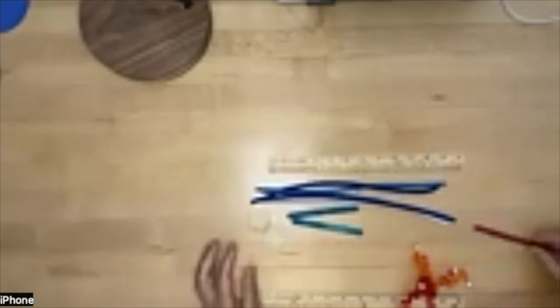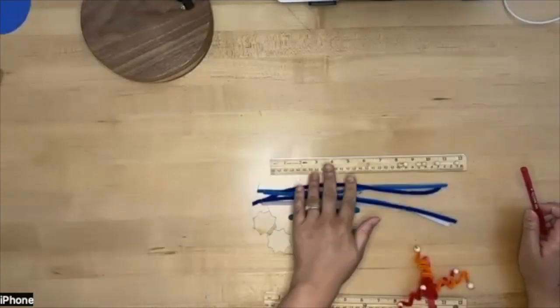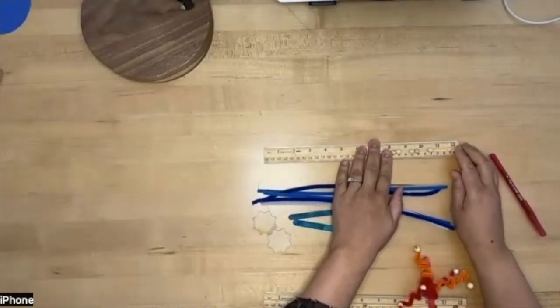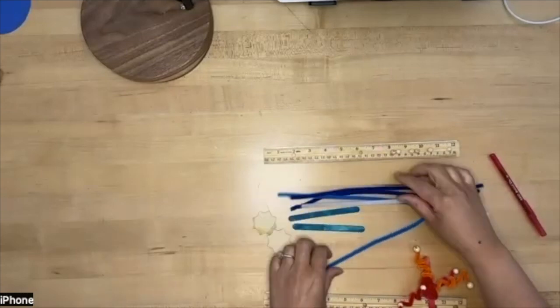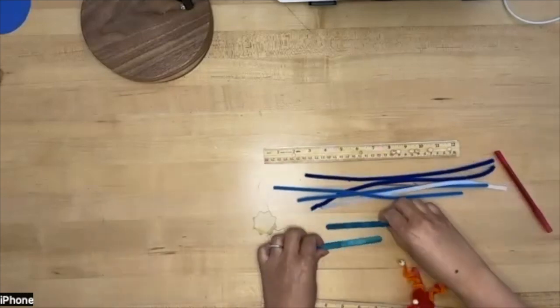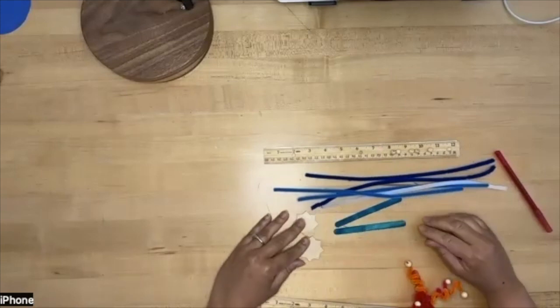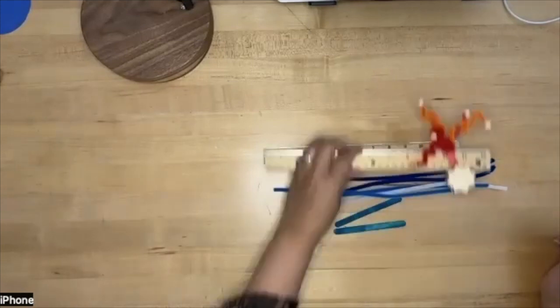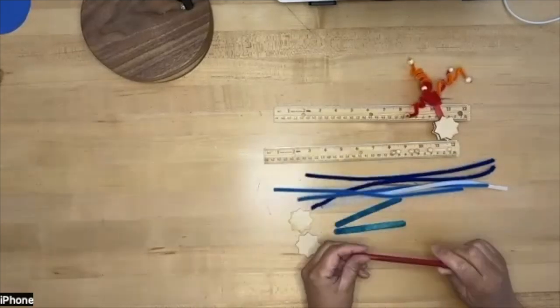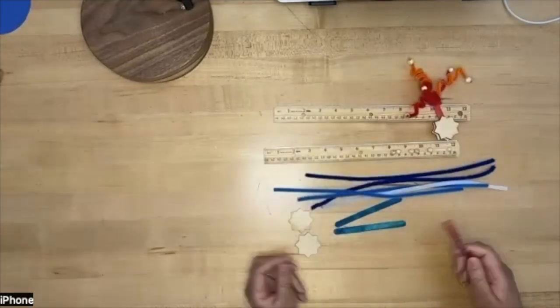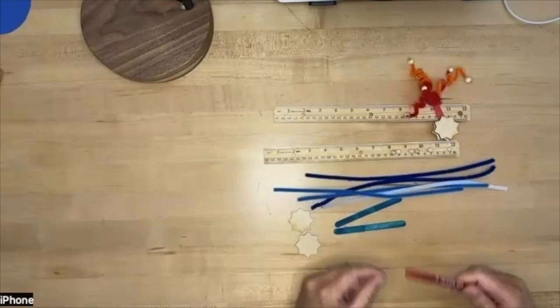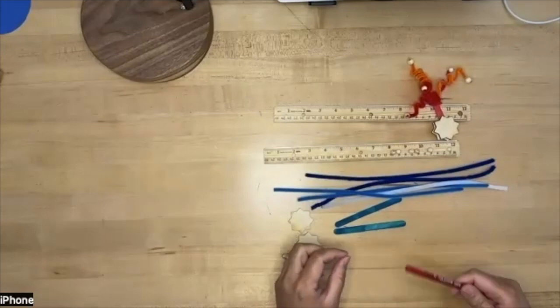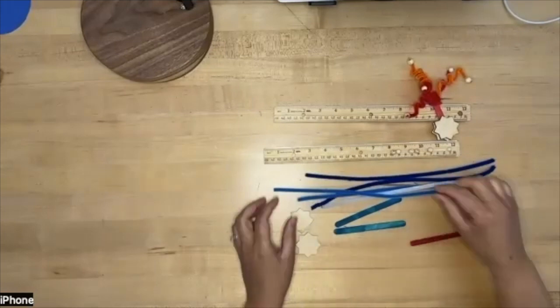Right so in your craft kit over here you should have a ruler, you should have some beads as well about five pipe cleaners, two popsicle sticks and two little geometric stars. You'll also need to have is just a pen or a pencil just so that we can make the little twirls with the pipe cleaners.